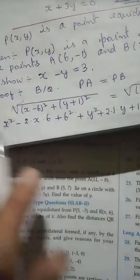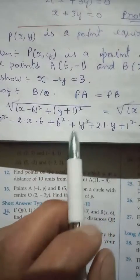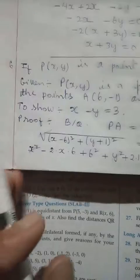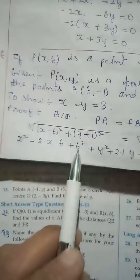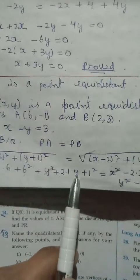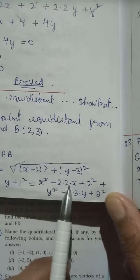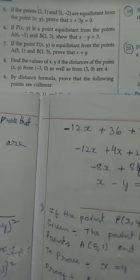Comparing both sides, we have x squared on both sides with the same sign, so we cancel them. Similarly y squared appears on both sides with plus sign, so we cancel those too. We are left with: minus 12x plus 36 plus 2y plus 1 on the left, and minus 4x plus 4 minus 6y plus 9 on the right.